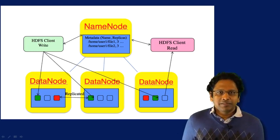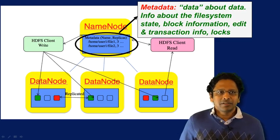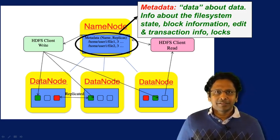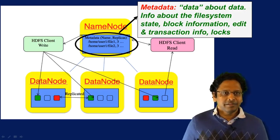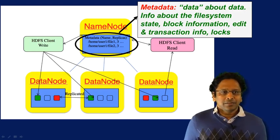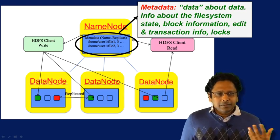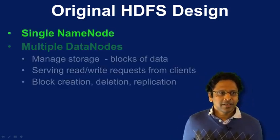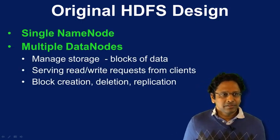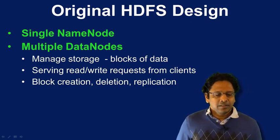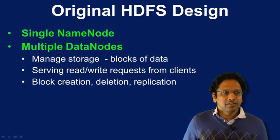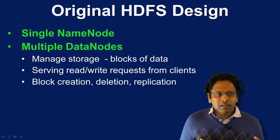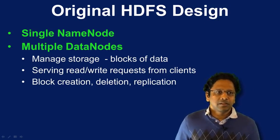Something has to keep track of all that data, and that's the name node. It maintains metadata — data about the data itself — including file system state, block information, edits and transaction info, and locks for write operations so processes don't step on each other. To summarize the original design: a single name node and multiple data nodes. Data nodes manage storage blocks, serve read and write requests from clients, and handle block creation, deletion, and replication based on name node instructions.